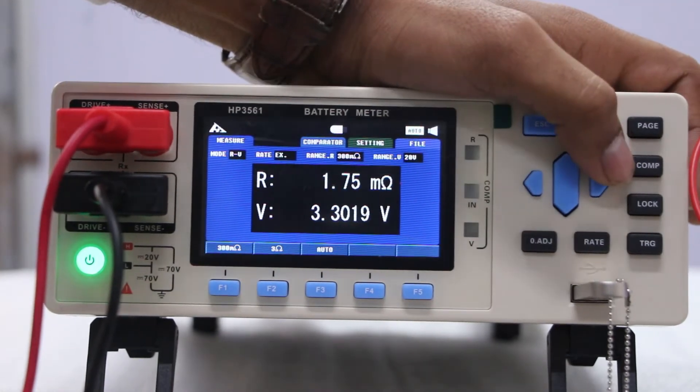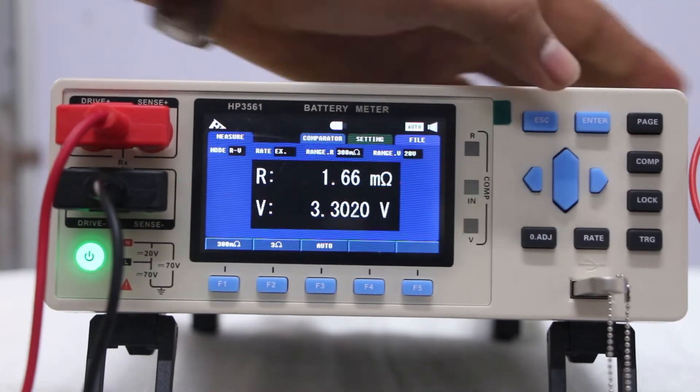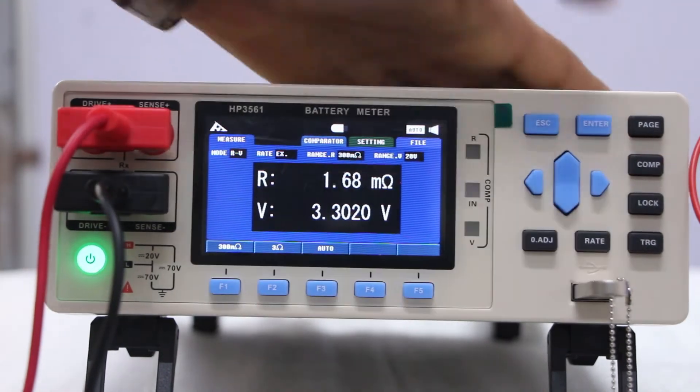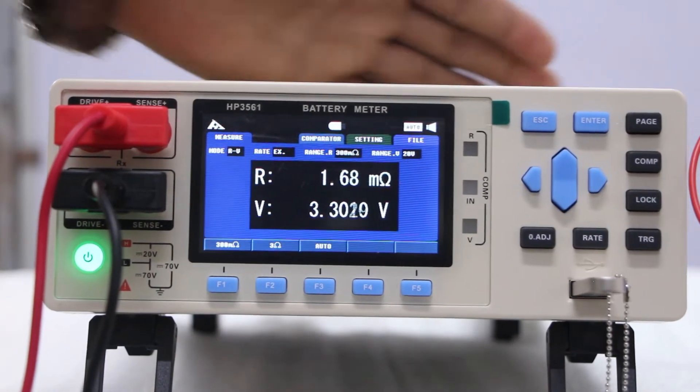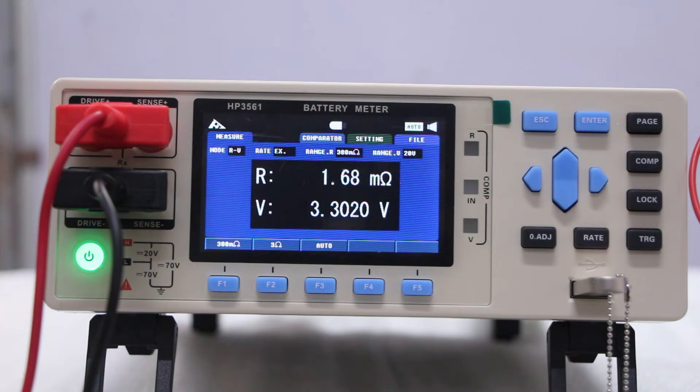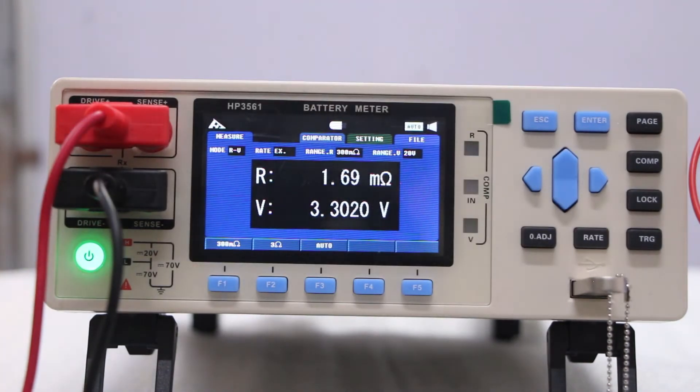This is a comparator button. COMP means comparator button. Actually comparator button is used for your setting purpose. Like when you are using lots of cells, you can use comparator for not good and good purpose.